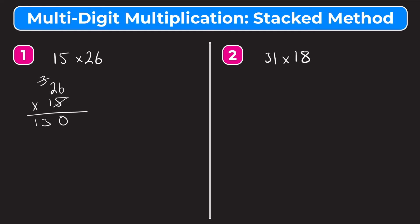Now we have 10 times 26. Since this 1 is in the tens place, this is a very important step — we have to write a 0 under the 5. Your first number when multiplying in the tens place always goes directly below the tens place. So we have 1 times 6, that equals 6, and then 1 times 2, that equals 2. So essentially we have 5 times 26, which is 130, and then 10 times 26, which is 260.